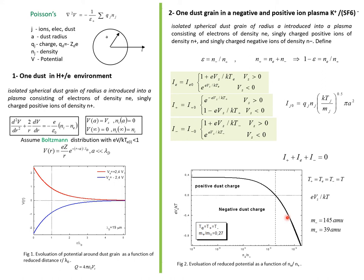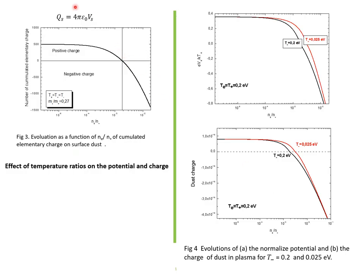Once the surface potential is estimated, the charge of a dusty plasma is defined using this equation. This plot shows the evolution as a function of density of electrons/density of positive ions of cumulated elementary charge on surface dust. In order to explore the effect of temperature ratio...